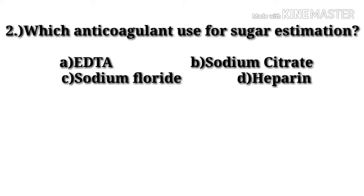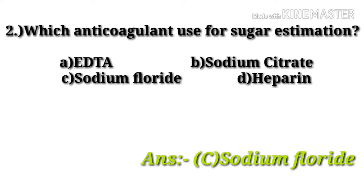Now comes question number 2: which anticoagulant is used for sugar estimation? Option A: EDTA, option B: sodium citrate, option C: sodium fluoride, option D: heparin. Sodium fluoride, option C, is the right one. Sodium fluoride is used for sugar estimation.